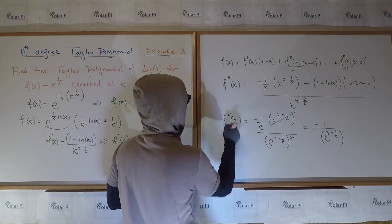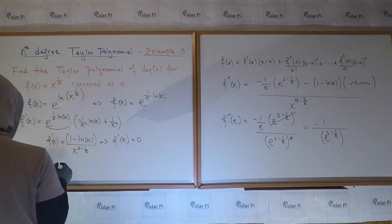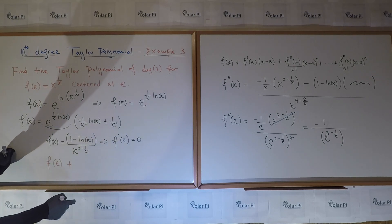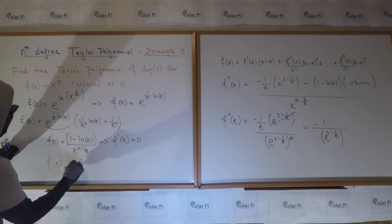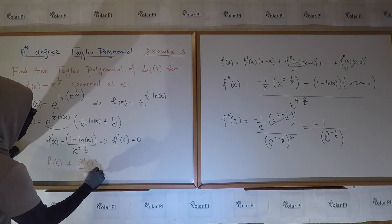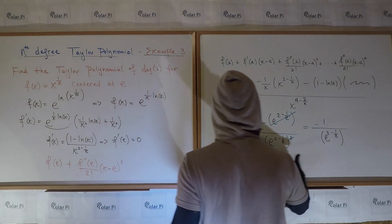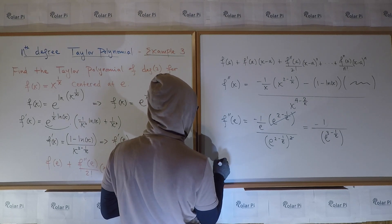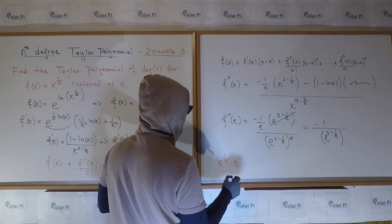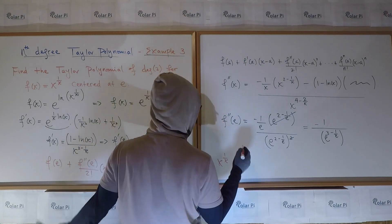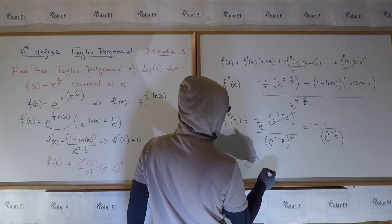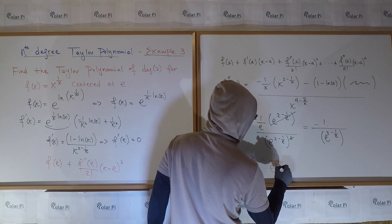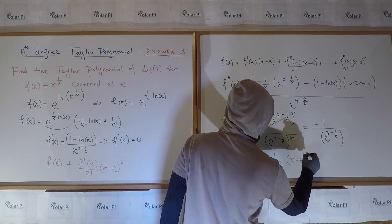So that means the second degree Taylor centered at e for this function is going to look like this. F of a is f of e, plus f prime of e — as we just saw, is 0 — so the x term is gone. And then I'll have f double prime of e over 2 factorial times x minus e to the second power. So x to the 1 over x is approximately equal to e to the 1 over e, plus negative 1 over e to the 3 minus 1 over e, times x minus e squared. That's a lot of e.